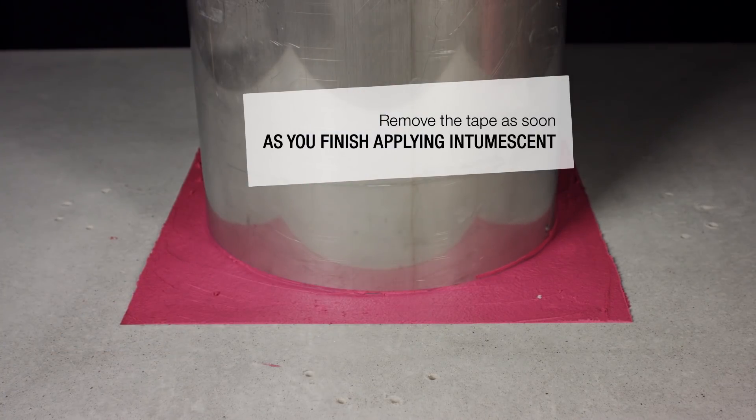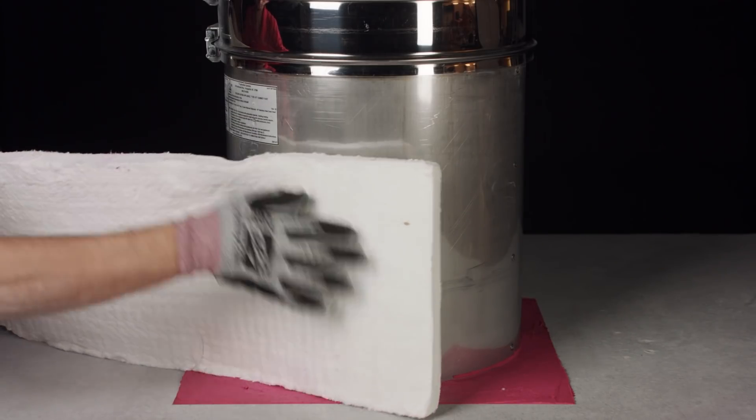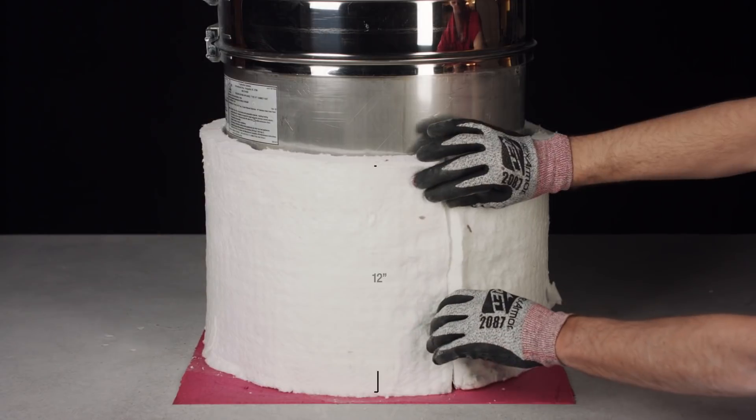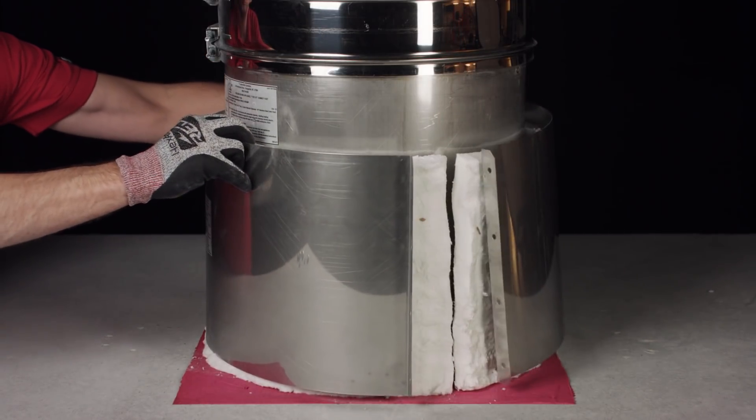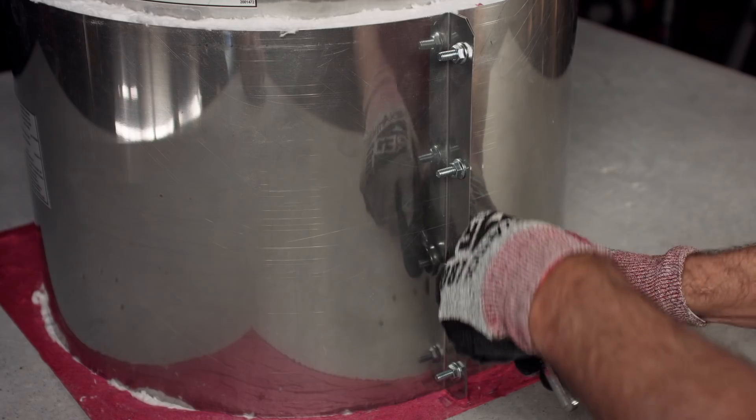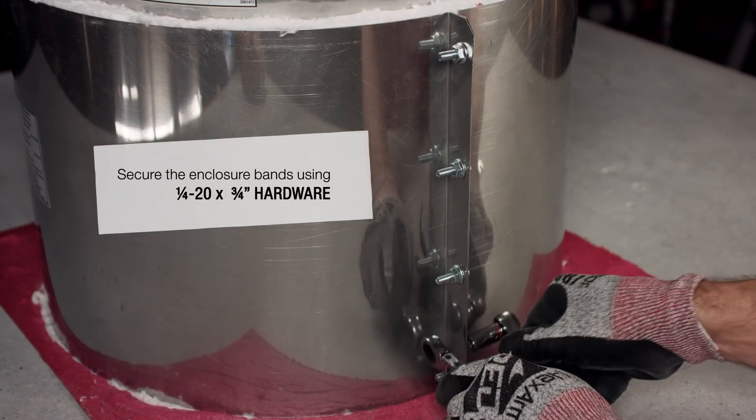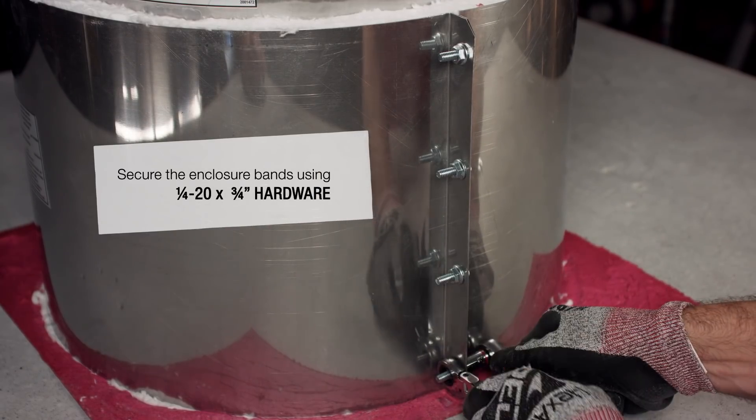Allow the intumescent to dry enough to create a skim coat. Then wrap one layer of 12 inch wide insulation around the base of the duct and place the half enclosure band around the insulation. Use quarter 20 by three quarters of an inch hardware to fasten the tabs of the half enclosure bands together.